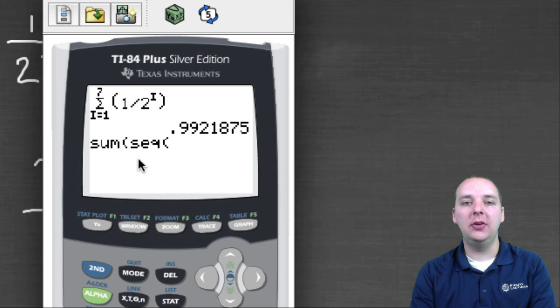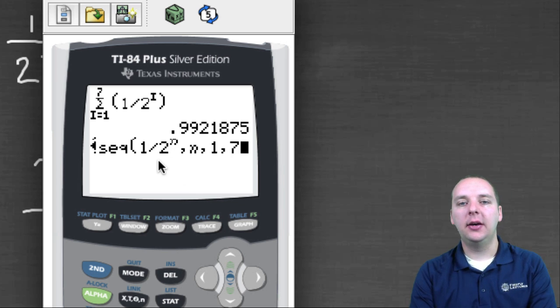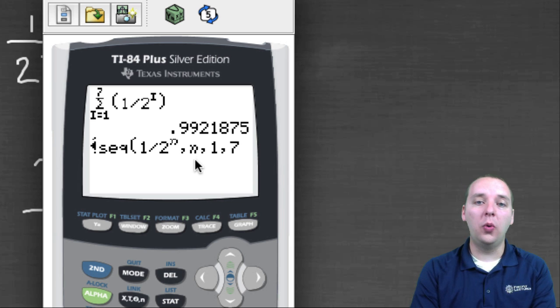And then now we just have to manually hand type the sequence. So the sequence is one divided by, it's sometimes a little bit easier here to use the variable notation like X, T, theta, N. We'll do one over two to the N, or two raised to the N rather. And this is going to be a function of N. So you also have to put comma N, so one over two to the N is a function of N, comma one comma seven.